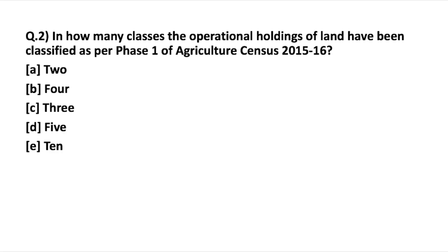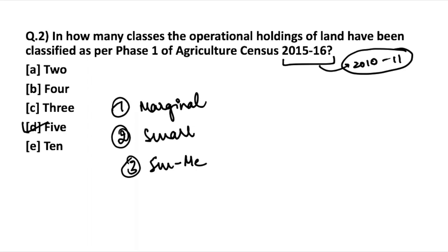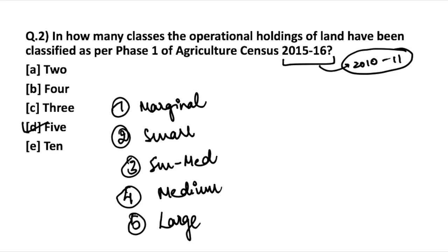The next question: in how many classes have the operational holdings of land been classified as per phase 1 of the agriculture census 2015-16? Both the 2015-16 and 2010-11 censuses use the same five classes of land holdings: marginal, small, semi-medium, medium, and large. It is important to remember these five classes of operational holdings.